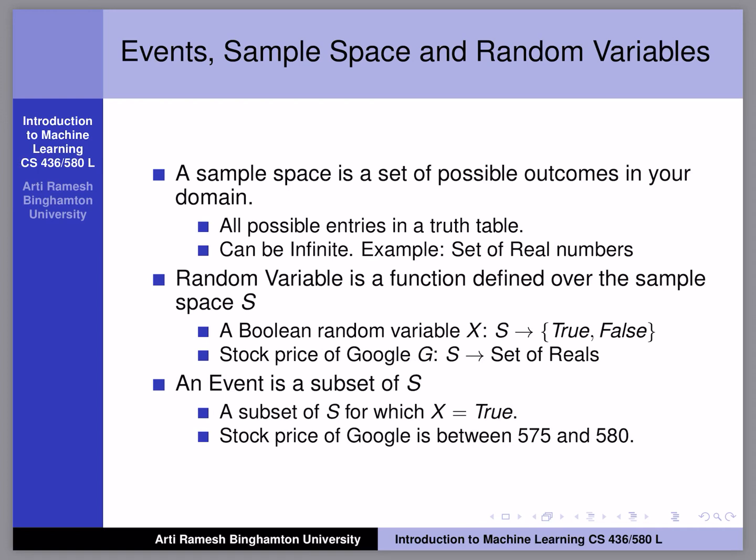An event is defined as a subset of the sample space S. For example, for a boolean random variable, an event could be all outcomes where X equals true. Another example: the stock price of Google being between 575 and 580 — that is an event. You are picking a range or set of possible values and saying that your event is composed of that subset. By definition, an event is a subset of your sample space S, which consists of all possible outcomes in your domain.